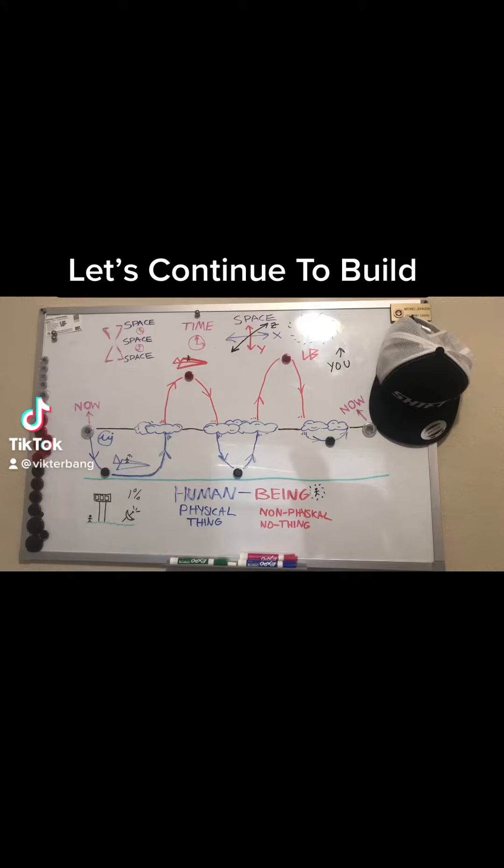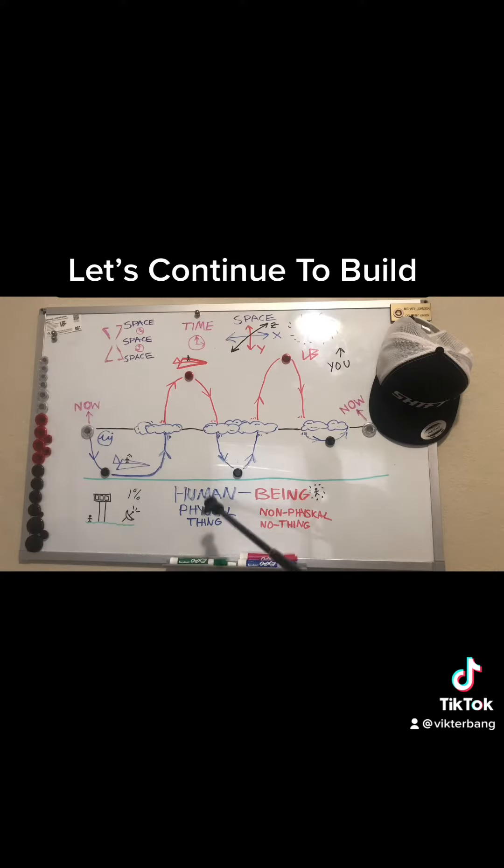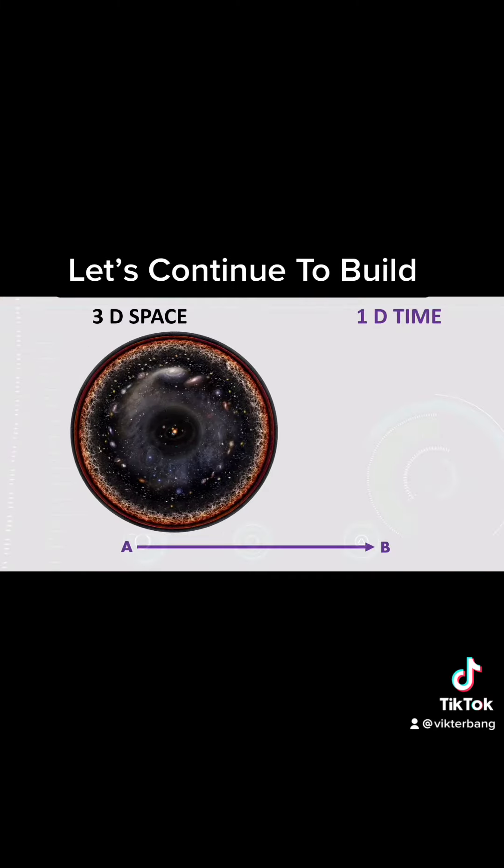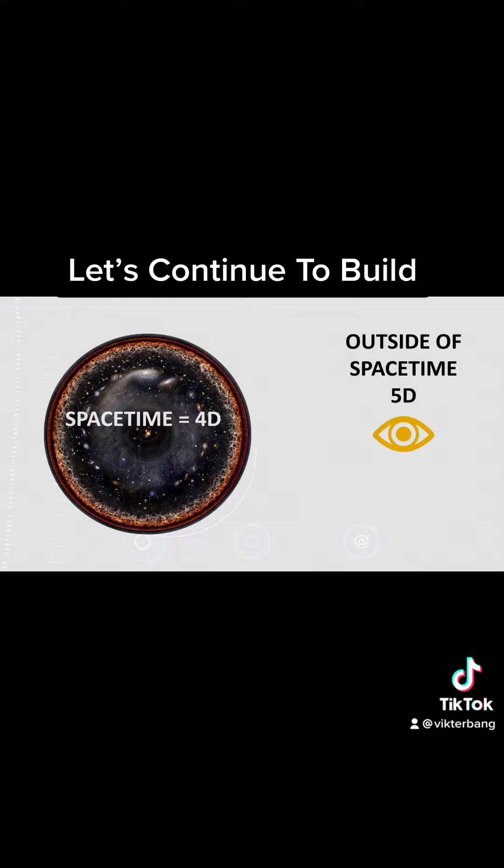Hey, what's good? We're going to continue to build on this. From the last one, we determined that you are a spiritual being having a human experience. You're experiencing space, 3D, and the movement of space is time from point A to point B. So 3D space, 4D time—you're at least a fifth dimensional being experiencing that.